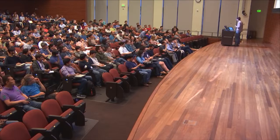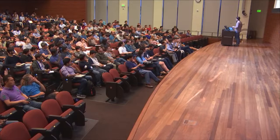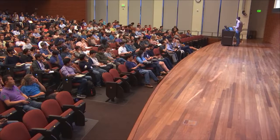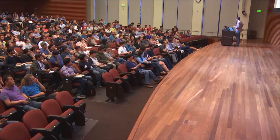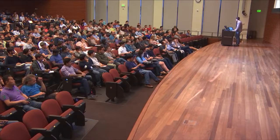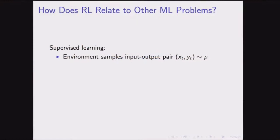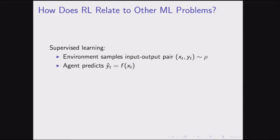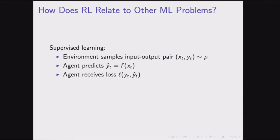How does reinforcement learning fit into the picture of other types of machine learning? Let's compare it to supervised learning. In supervised learning, the environment samples an input-output pair from some distribution. The agent makes a prediction using its function f, and receives a loss telling it if it made the right prediction. The interpretation: environment asks the agent a question and then tells it the right answer.